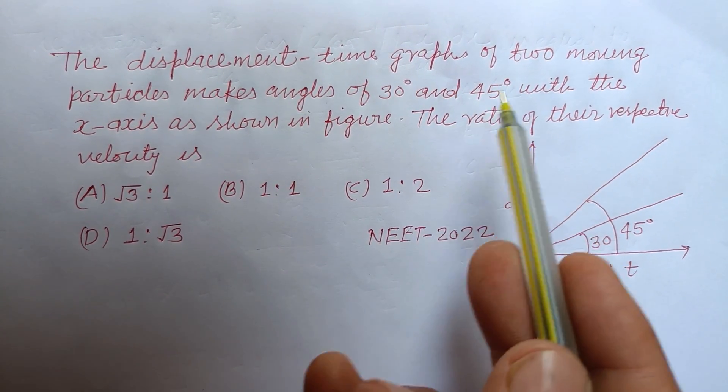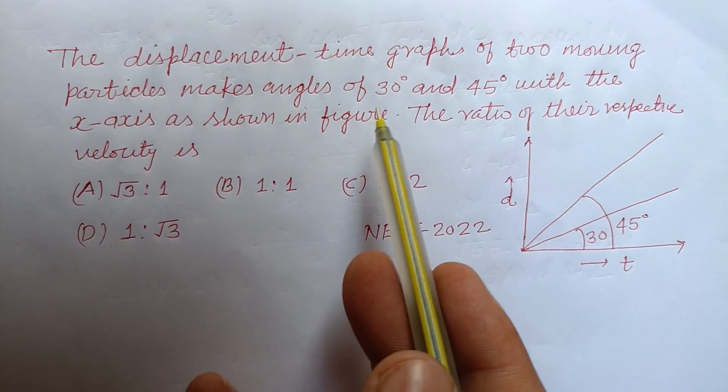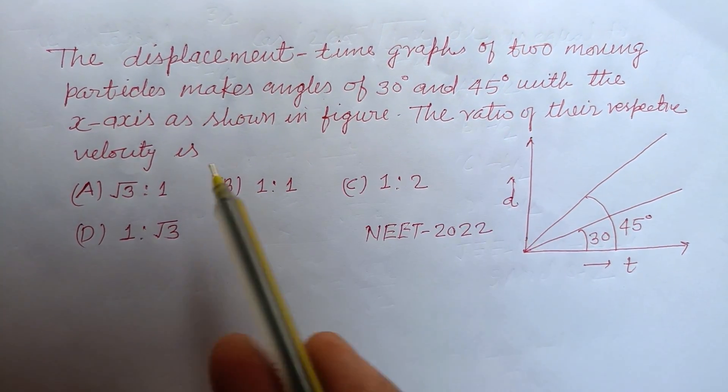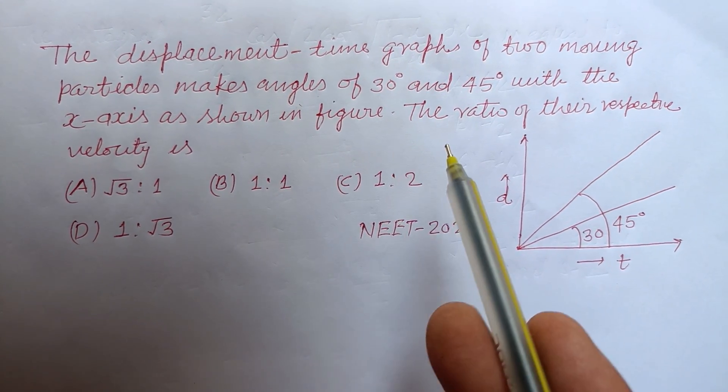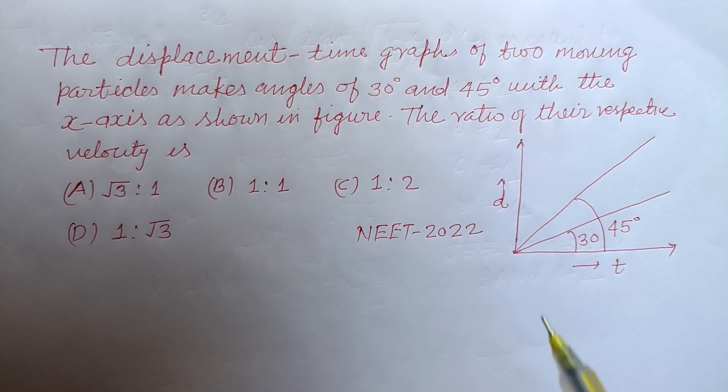The displacement-time graph of two moving particles makes angles of 30 degrees and 45 degrees with the x-axis as shown in the figure. The ratio of their respective velocity is.